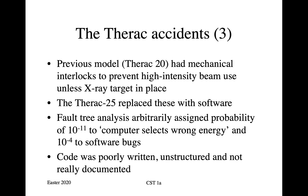The THERAC-25 replaced these hardware interlocks with software, and they did a fault tree analysis of the kind discussed earlier in this course. But they basically thought up numbers and stuck them in — they assigned a probability of 10 to the power minus 11 to 'computer selects the wrong energy', and at most places in the fault tree they arbitrarily assigned a probability of 10 to the minus 4. The code was poorly written, unstructured, and not really documented. It ran on a PDP-11, an old minicomputer, and it was written in Assembler rather than a high-level language. So all sorts of things could go wrong, and in the end did go wrong.